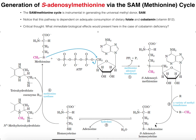This molecule now has to be degraded and converted back to methionine. S-adenosyl homocysteine, also abbreviated SAH, will be hydrolyzed by S-adenosyl homocysteine hydrolase, kicking off the adenosine, and the remainder is just the amino acid homocysteine.